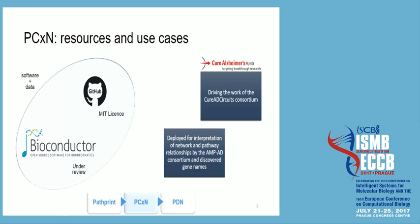As with Pathprint, PCXN is also publicly available on GitHub, and the R package is under review at this point, including both software and ready-made data from Pathprint that you can use instantly. Although PCXN is about one year old and the supporting paper is under review, it has some interesting use cases — the first being its collaboration with Pathprint in the Cure Alzheimer's Fund, where it's used heavily in the work of the LOAD Circuits Consortium.